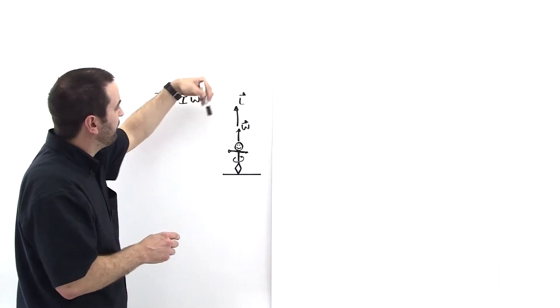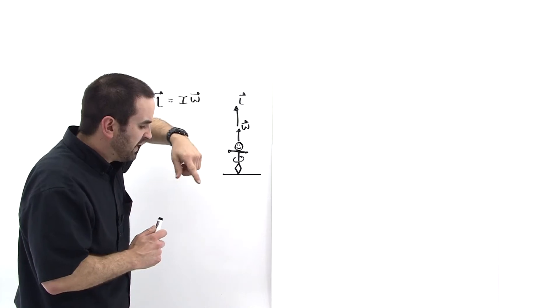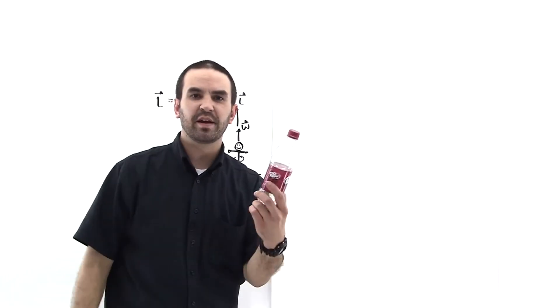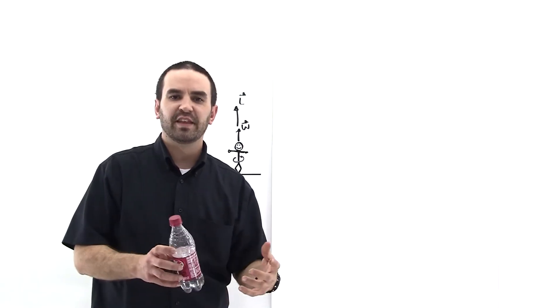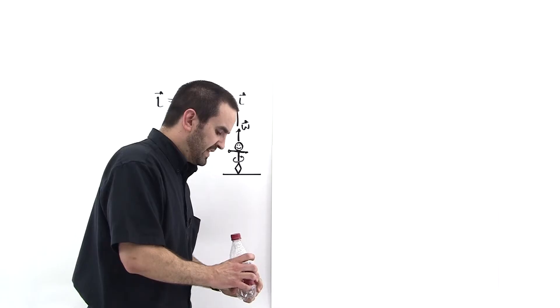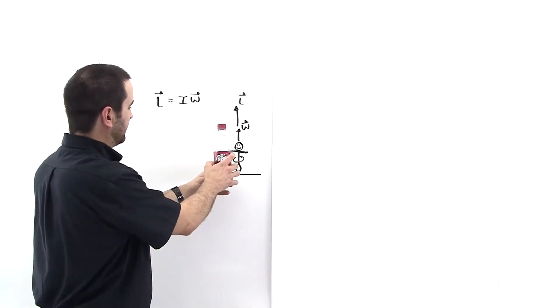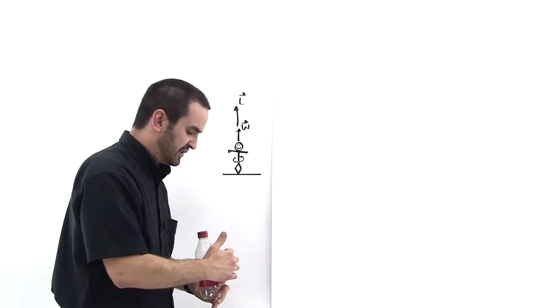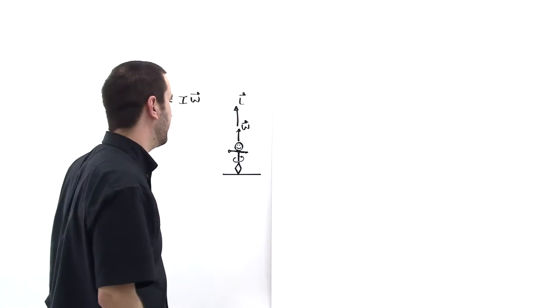Notice that looking down from above, the person is rotating counter-clockwise. It's not a bad idea to bring a bottle into the exam — you look down from the top, rotate your fingers, and say 'okay, it's up.' This is a good spatial trick to bring with you into the exam.